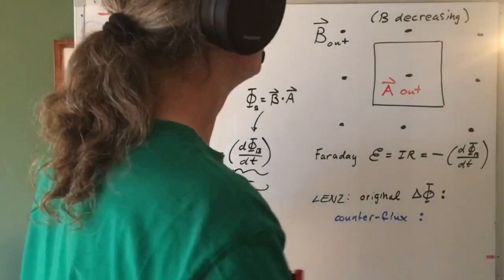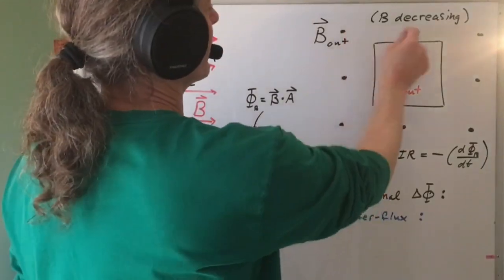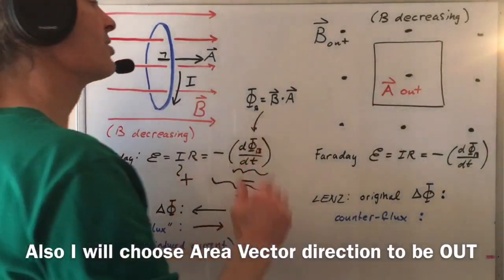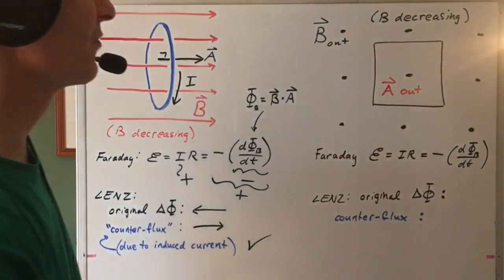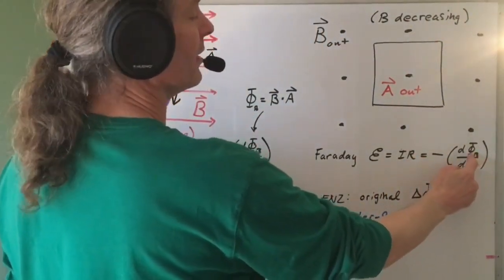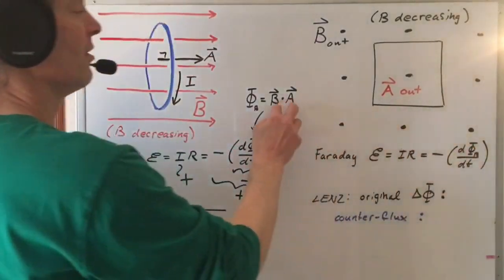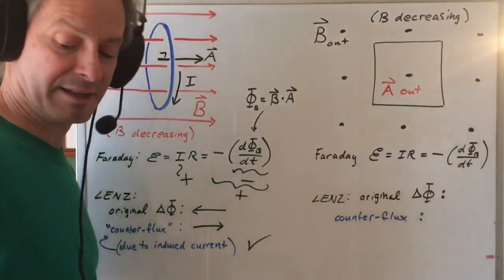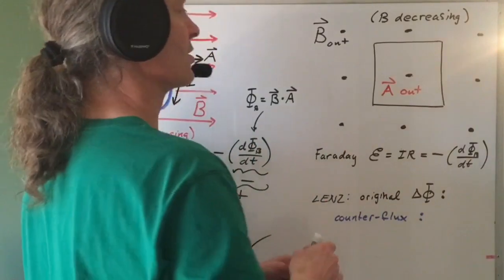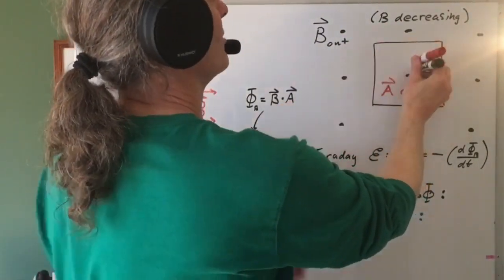Let's do another example. In this case, I've got a square loop in the plane of the board. I have a magnetic field coming out of the board, and let's assume the magnetic field is decreasing. Let's do a Faraday's law sign convention analysis. I need to find my rate of change of magnetic flux. Flux itself, remember, is B dot A assuming a uniform magnetic field. My magnetic field is coming out of the page, my area vector is coming out of the page, so that dot product is going to be positive — I've got a positive flux.